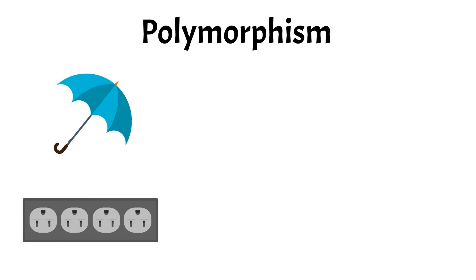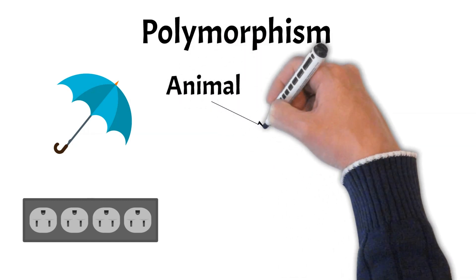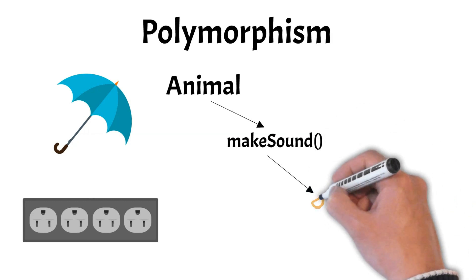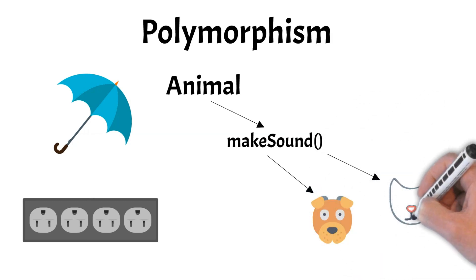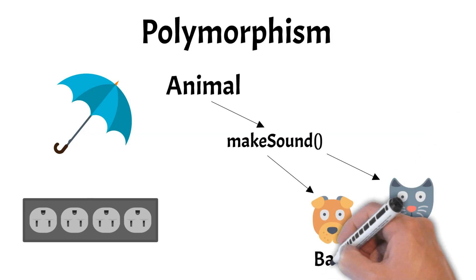For instance, consider a superclass animal with a method make sound. Different subclasses like dog and cat can each implement this method uniquely. Dog might return a bark sound, while cat might return a meow sound.